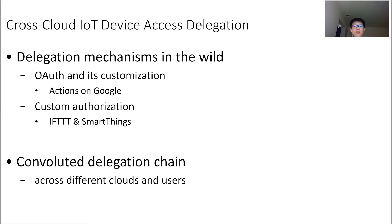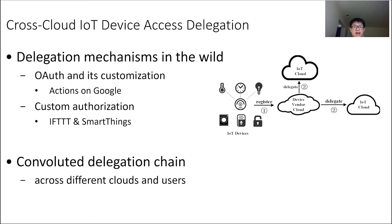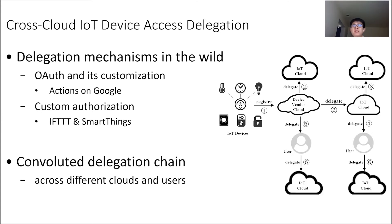For example, Google Home uses a customized OAuth protocol for access delegations. Such mechanisms can support delegation across different clouds and users, which can lead to a convoluted delegation chain whose complicated authorization operations could easily go wrong. However, little has been done so far to systematically analyze and understand the security implications of such mechanisms.